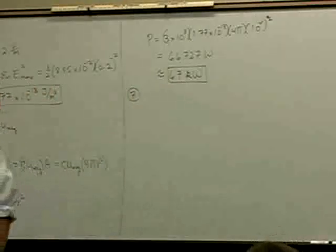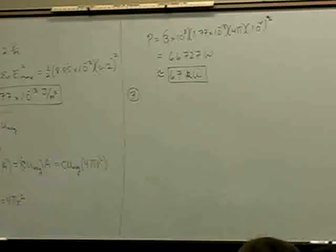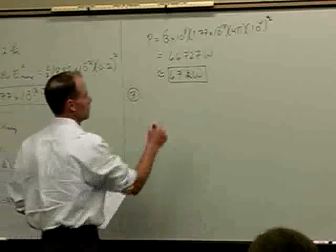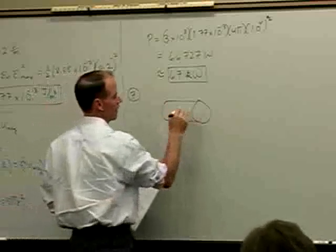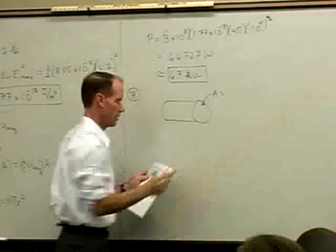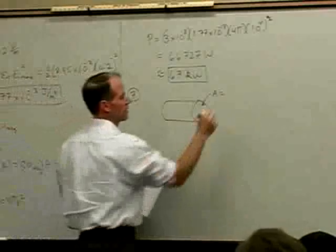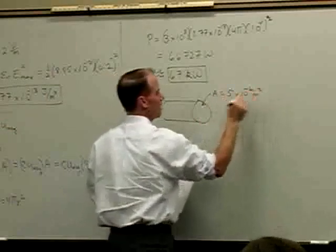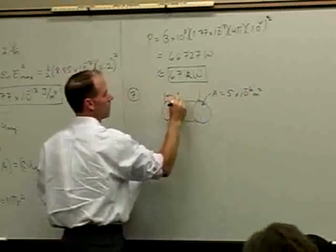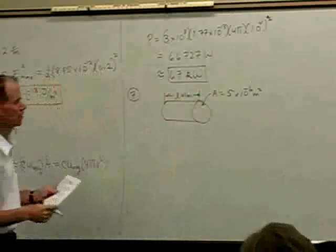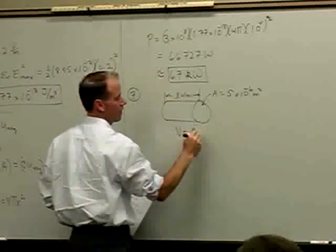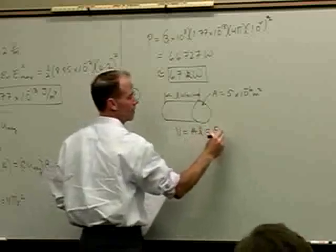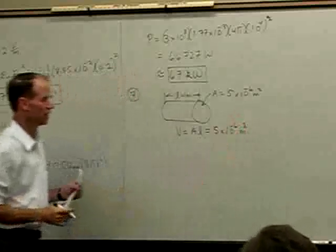Determine the amount of energy carried in one meter of a 3.5 milliwatt helium-neon laser beam, where the cross-sectional area of the beam is 5 times 10 to the minus 6 square meters. The volume will be the cross-sectional area times the length — 5 times 10 to the minus 6 cubic meters times 1 meter.